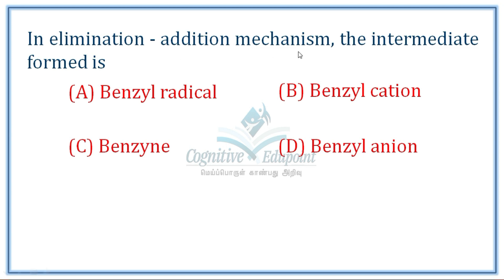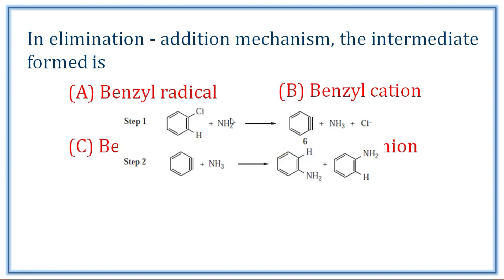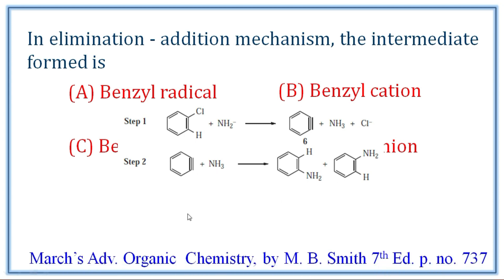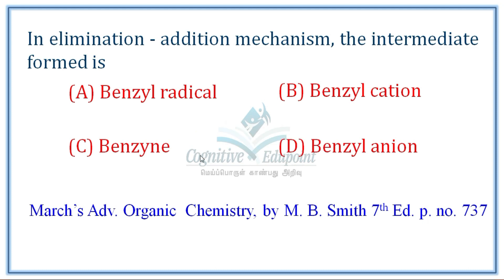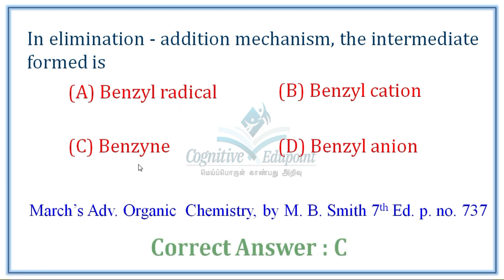Next question: In the elimination-addition mechanism, the intermediate formed is? First step is elimination, second step is addition. In the elimination step, bond fission occurs giving benzyne formation. Then addition takes place — HCl adds to benzyne. The intermediate in the elimination-addition mechanism is benzyne. Correct answer is C.